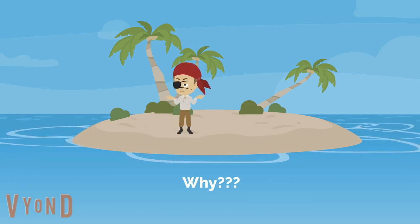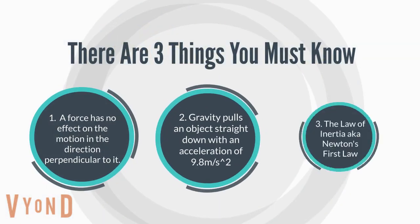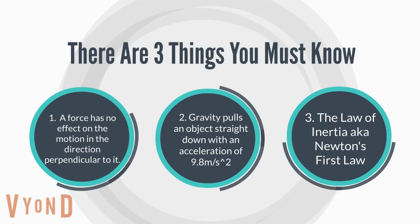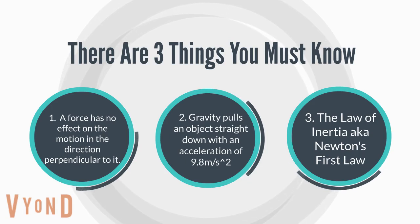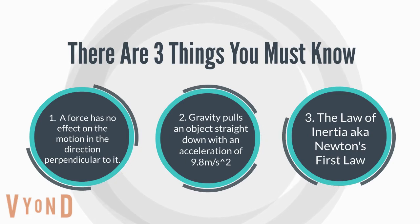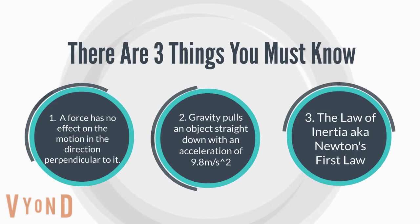Why? There are three things you must know. Number 1: a force has no effect on the motion in the direction perpendicular to it. Number 2: gravity pulls an object down with an acceleration of g equals 9.8 meters per second squared. Number 3: the law of inertia, also known as Newton's first law.